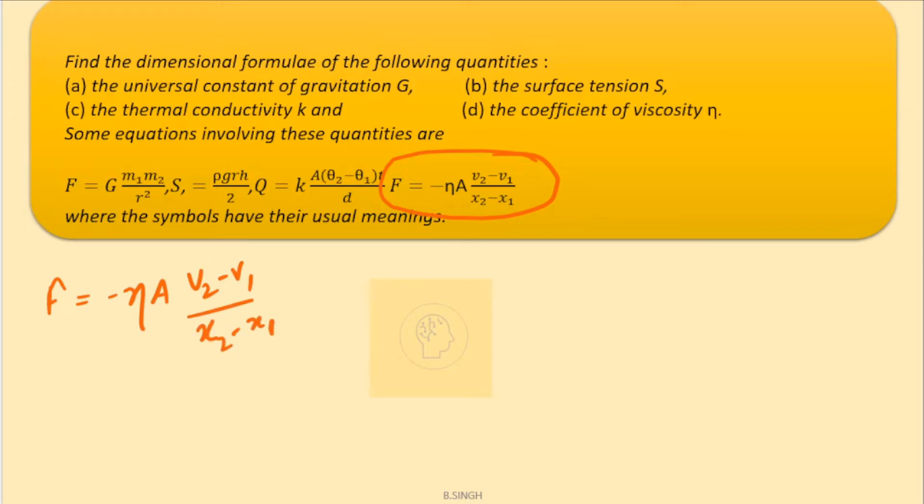To find the dimensions of eta, let us take everything on the other side and rewrite this expression. So, eta will be equals to F into x2 minus x1 whole divided by A into V2 minus V1.